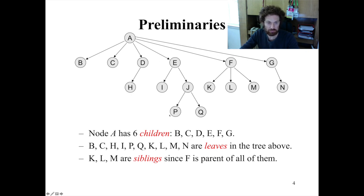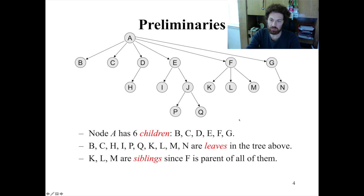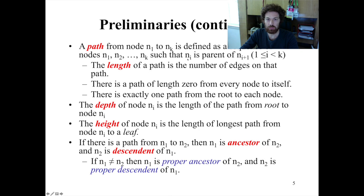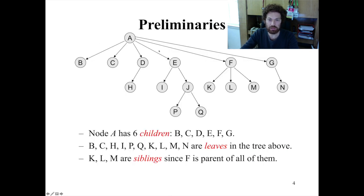A leaf is a node without any children, like I or L. Siblings are nodes that share the same parent — like K, L, M are siblings. A path from node N1 to Nk is a sequence of nodes where every node Ni is the parent of Ni+1. For example, path A-E-J-P is a path where E is the parent of J.